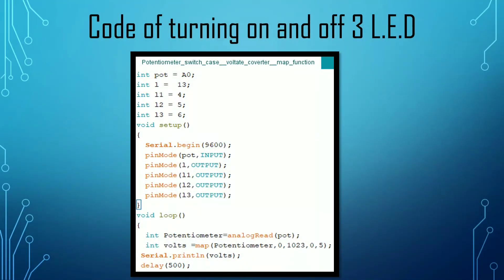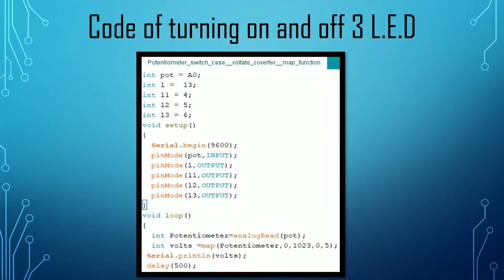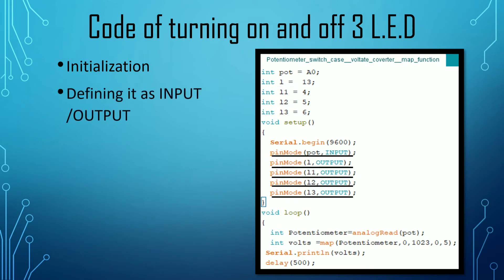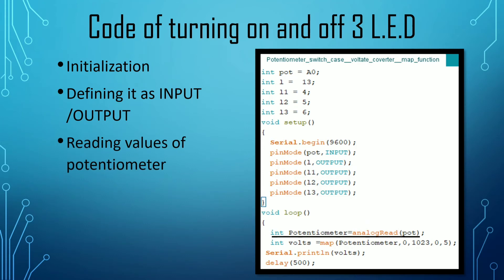Let us now discuss the code of turning on and off 3 LEDs. Firstly, I have done the initialization of potentiometer on A0, LEDs on 13, 4, 5, 6 respectively. Then I have written them as input and output. Then I have done the reading of the values of potentiometer. And then I have used the map function and printed them on serial monitor.